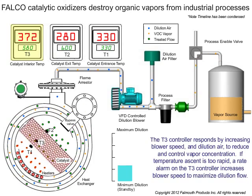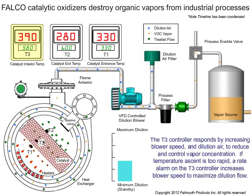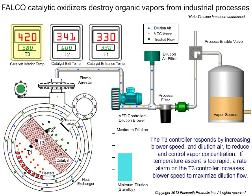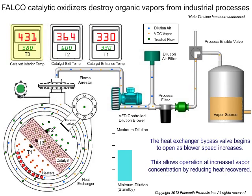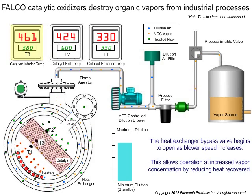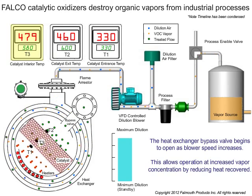If temperature ascent is too rapid, a rate alarm on the T3 controller increases blower speed to maximize dilution flow. The heat exchanger bypass valve begins to open as blower speed increases, allowing operation at increased vapor concentration by reducing heat recovered.